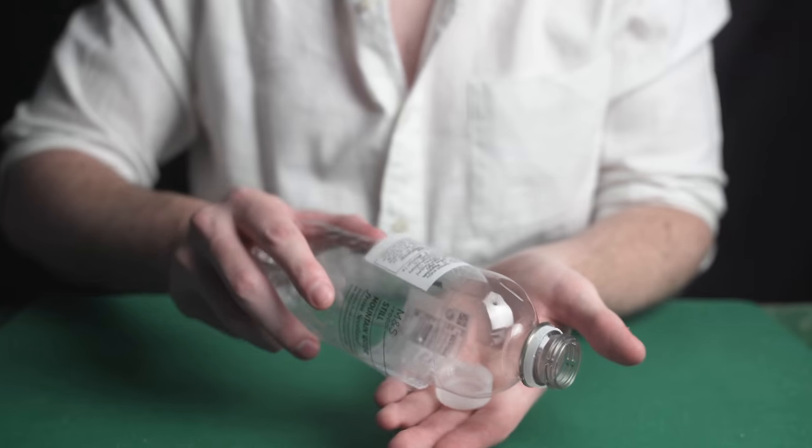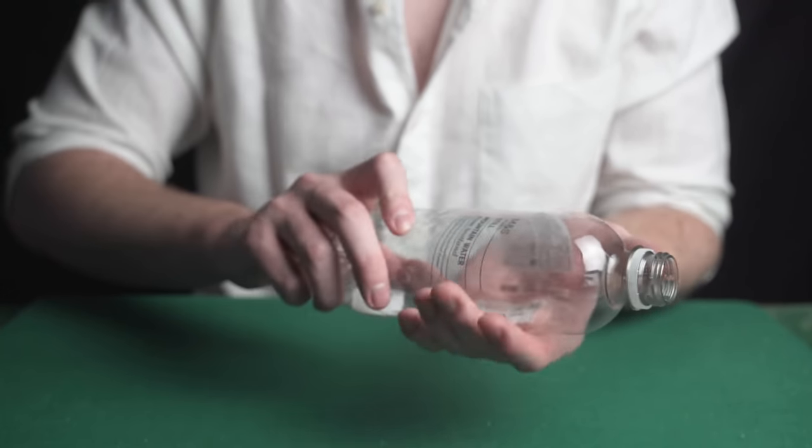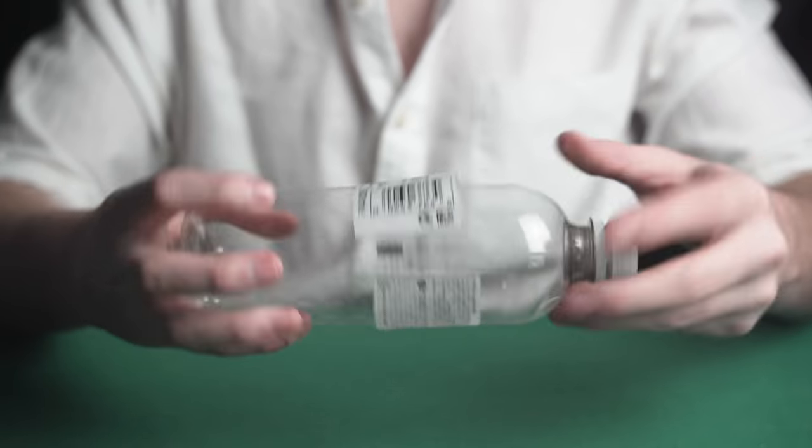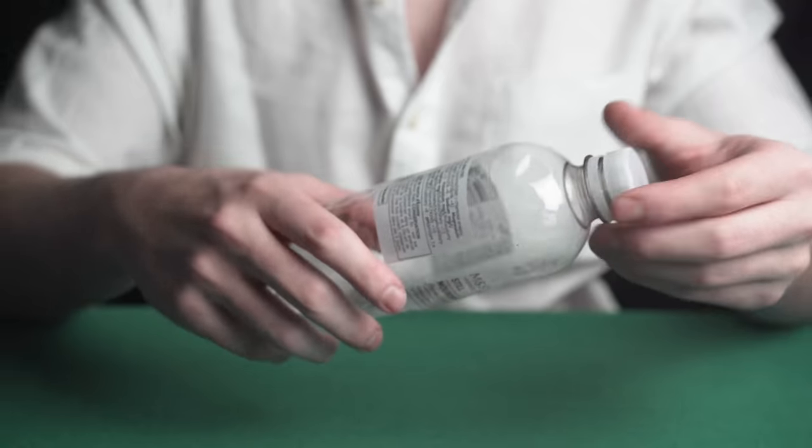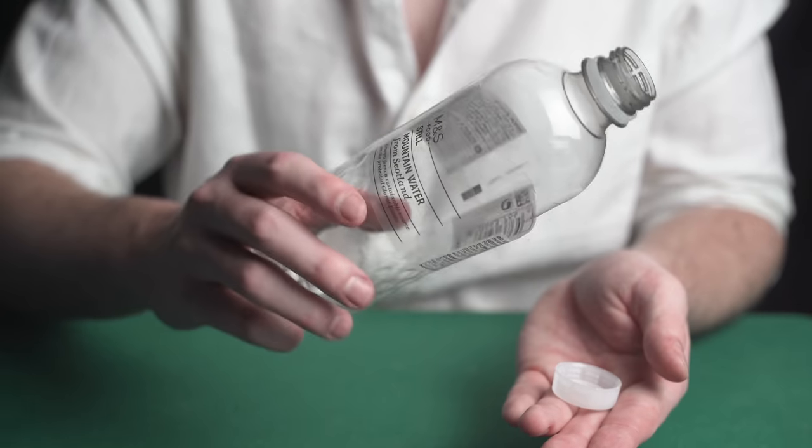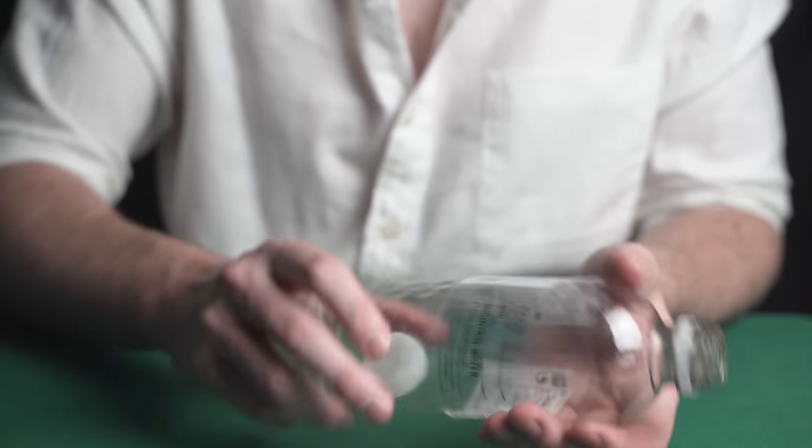The next trick is hyper visual. The magician shows both hands empty. He takes the lid off the bottle and then pushes the lid inside the bottle.